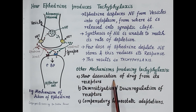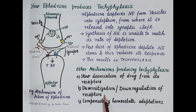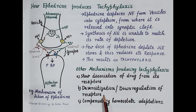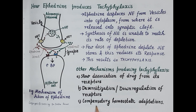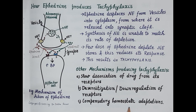Other mechanisms that produce tachyphylaxis are: slow dissociation of the drug from its receptors; desensitization or down-regulation of receptors, meaning a reduction in the number of receptors; and compensatory homeostatic adaptations, where the body adopts compensatory mechanisms that oppose the action of the drug. This is a brief overview of the concept of tachyphylaxis.